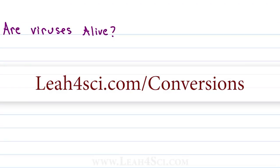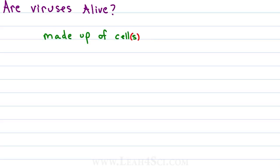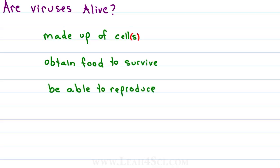Unlike the other live pathogens like bacteria, fungi, or parasites, viruses are actually not alive — although some will argue that they are. Characteristics that define a living organism include: must be made up of a cell or a group of cells, obtain food to grow and survive, adapt to the environment, and most importantly, be able to reproduce — be able to have children.